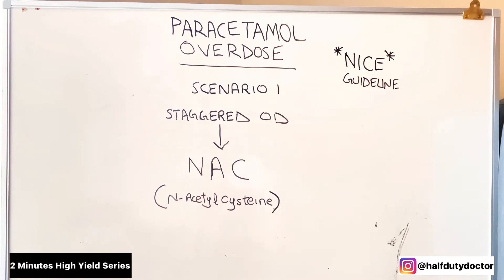The first scenario is a person who has presented with a staggered overdose, which means they have taken tablets over a gap of a few hours and not all at once. For such a patient, you need to administer NAC immediately. NAC is N-acetylcysteine, which is the antidote for paracetamol overdose.